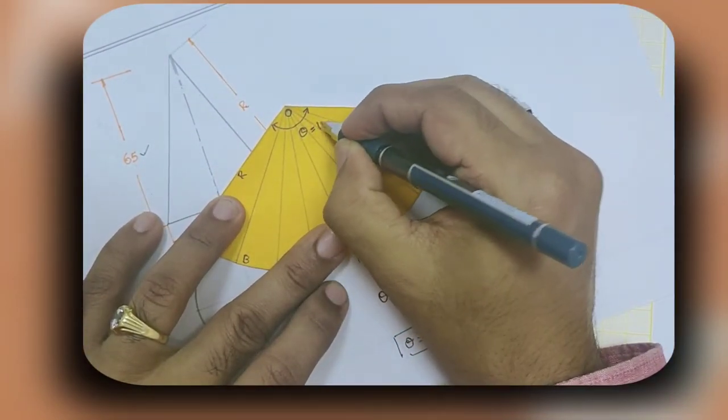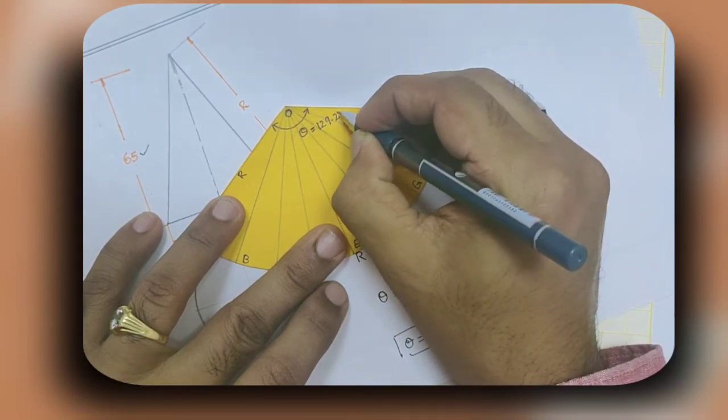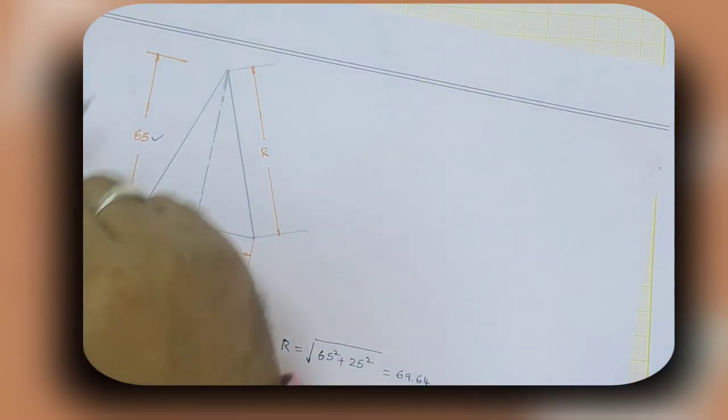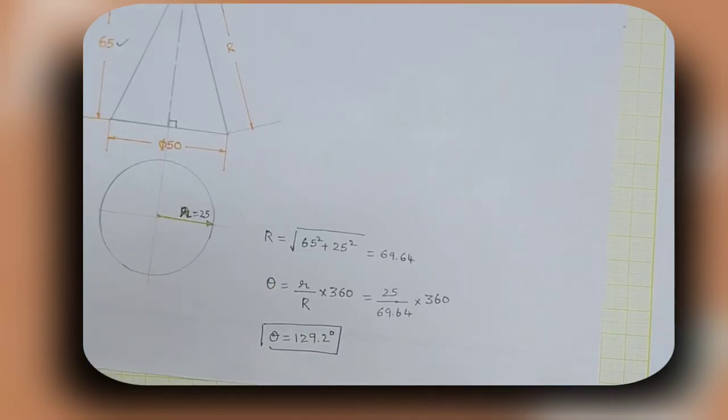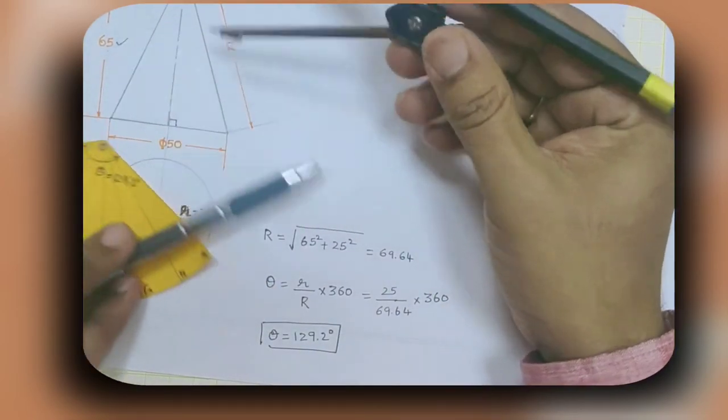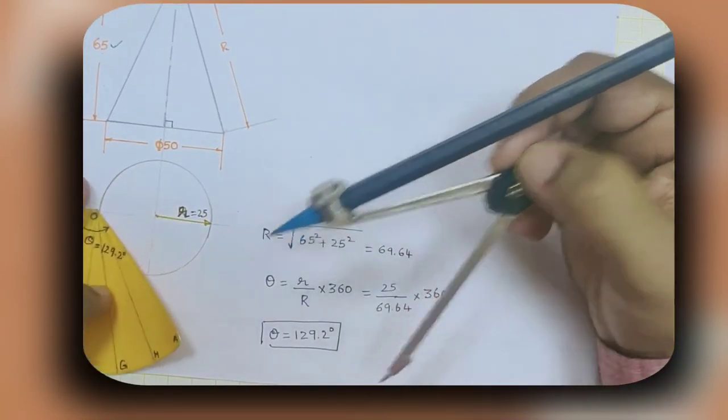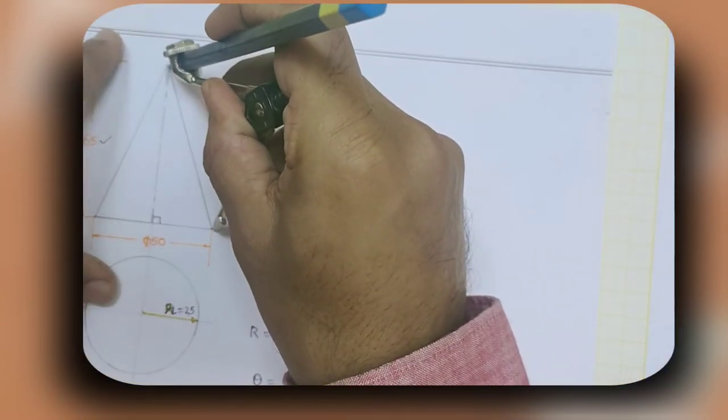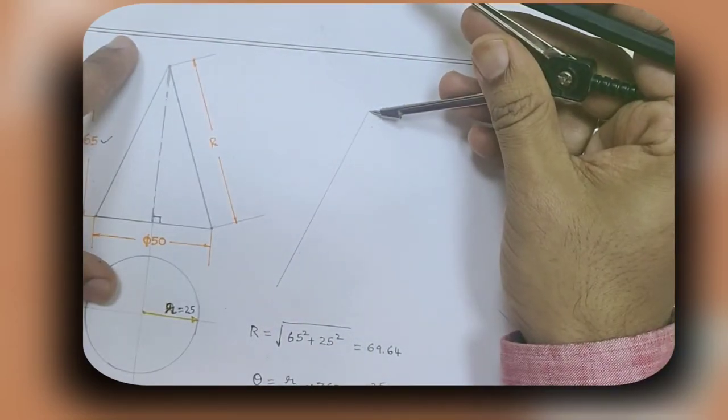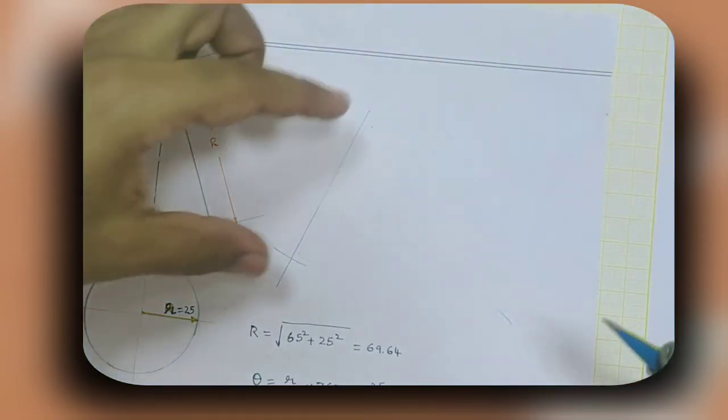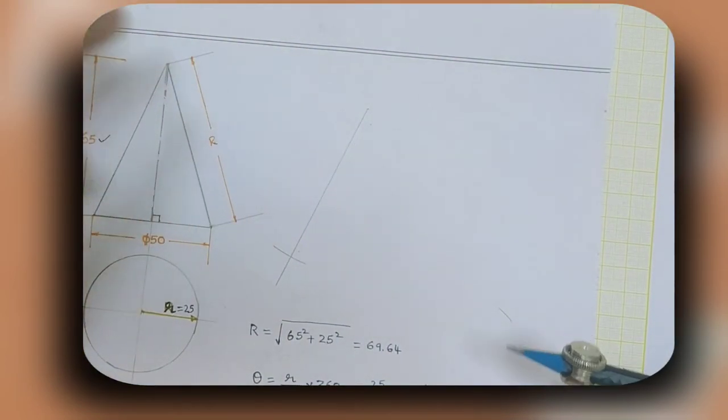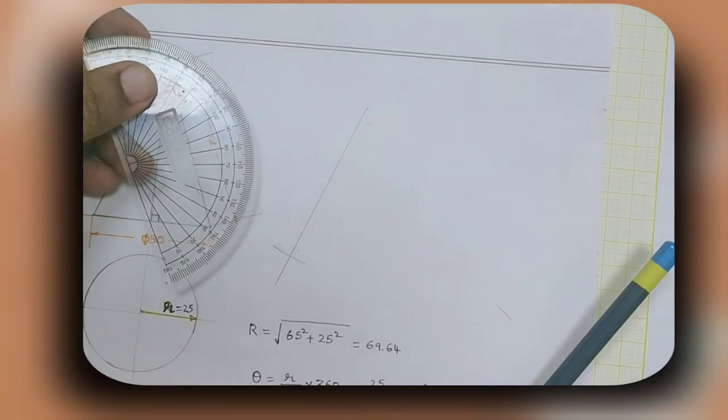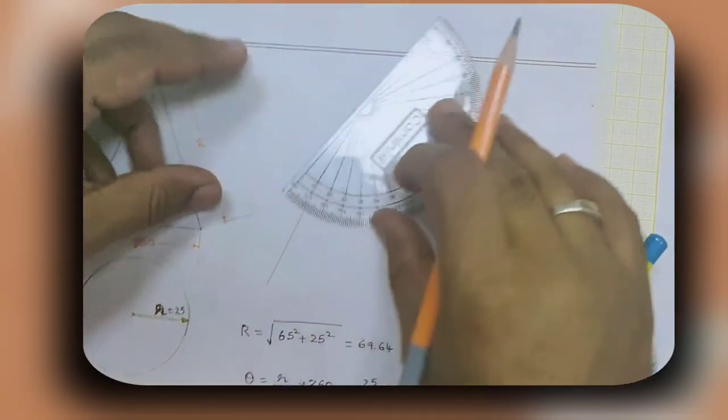This is the value of theta. Now what you can do is draw a line. The main concept was to find the value of R to get the angle theta. Now that we have got the value of angle theta, we can draw this sector with the scale. Using this arc here, fixing some point, cut the arc. This will give us the value of R. Once you have found that, now make use of the protractor and measure this angle 129.2 degrees.